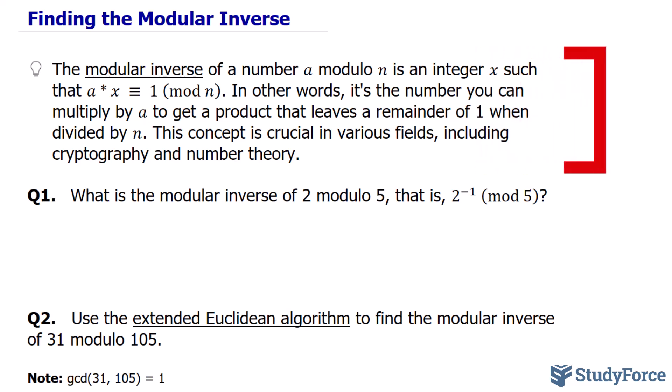The modular inverse of a number a mod n is an integer x such that when we multiply x with a, it is congruent to 1 mod n. In other words, it's a number you multiply by a to get a product that leaves a remainder of 1 when divided by n. This concept is crucial in various fields, including cryptography and number theory.